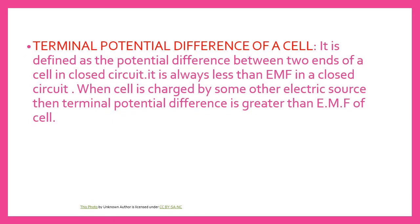Next is the terminal potential difference of a cell. EMF applies when you take a new cell with no current drawn — the potential difference equals the EMF. When you connect the cell into a closed circuit and current flows, the potential difference becomes the terminal potential difference. The potential difference between the two ends of a cell in a closed circuit is always less than the EMF.